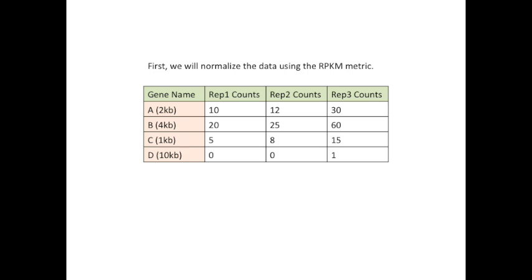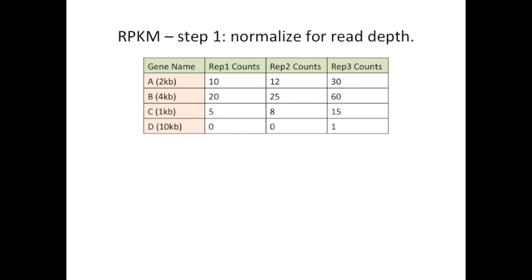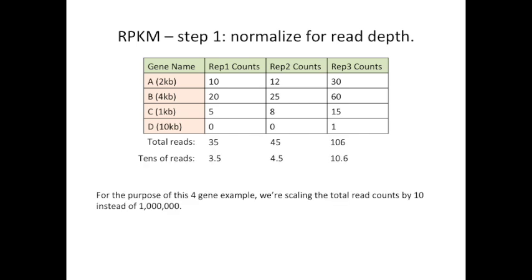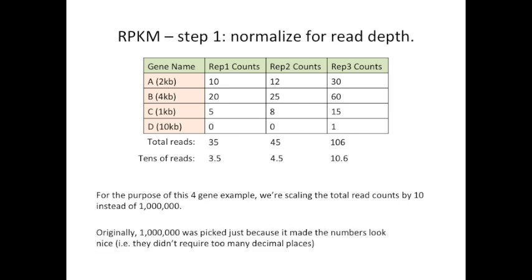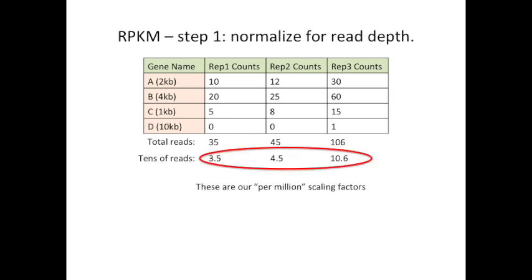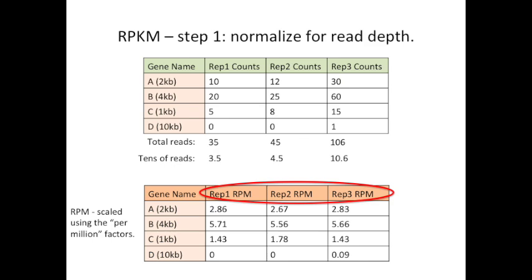First, we're going to normalize the data using the familiar RPKM metric. With RPKM, the first step is to normalize for read depth. Here, we've calculated the total number of reads in each replicate. For the purpose of this four-gene example, we're going to scale the total read counts by 10 instead of 1 million — this will make the numbers easier to read, but consider tens and millions of reads to be interchangeable just for this example. Originally, 1 million was picked just to make the numbers look nice so they wouldn't require too many decimal places. Thus, these are our per-million scaling factors for each replicate. We divide the read counts for each gene by the appropriate scaling factor, giving us the reads per million for each replicate.